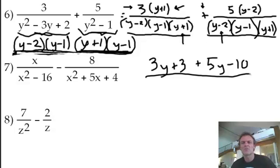Now I'm not going to write the lowest common denominator. I'll put it at the end. I know it's there. It's not going to change. I'm just working on the numerator. So I have 3y and 5y is 8y. And, 3 take away 10 is negative 7.